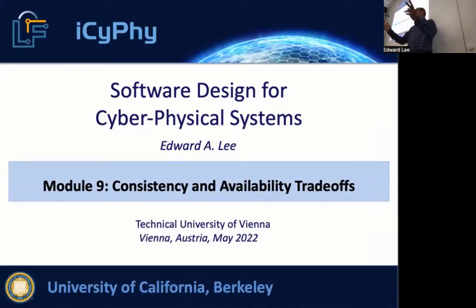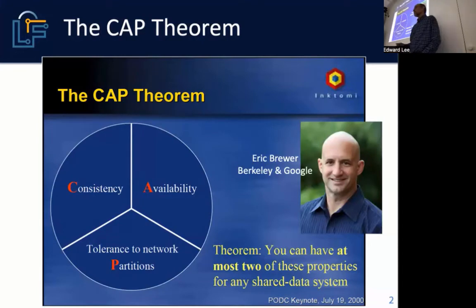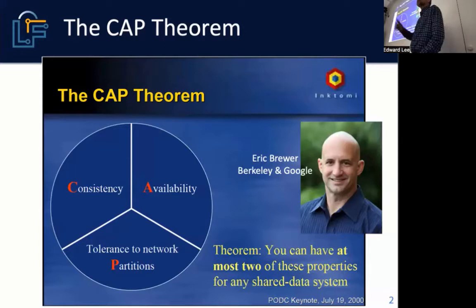Today we're going to talk about consistency and availability trade-offs. The background is a theorem introduced informally first by Eric Brewer, who is a colleague at Berkeley and also a senior figure at Google, way back in the year 2000 when he gave a keynote talk at the Principles of Distributed Computing Conference.